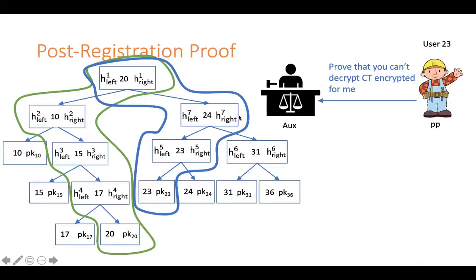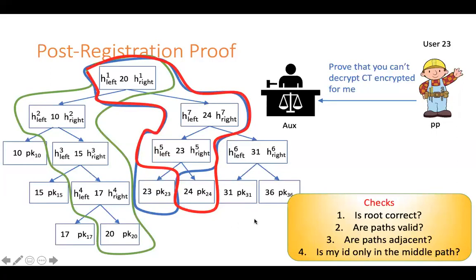Now let's see how the authority gives proofs for registered users. Here Bob has user ID 23 and user 23 is registered in the current tree. The authority wants to give a proof that Bob is uniquely registered — meaning Bob is not registered twice. Since the tree is sorted, the authority gives a path to the leaf with user 23, a path to the leaf just before it, and a path to the leaf just above user 23 — the proof contains three paths. Bob verifies that the three paths are adjacent to each other and that his public key and identity are in the middle path. Since the auxiliary information contains many trees, Bob may be present only in some trees and not others. For the trees in which Bob is present, the authority gives a proof that Bob is uniquely registered. For the trees in which Bob is not present, the authority gives a proof that Bob is not registered.